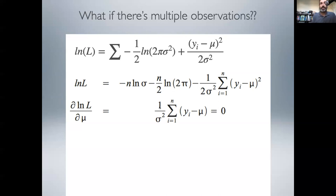And we just now get this one over sigma squared, sum of yi minus mu, set that equal to zero. As before, we can multiply each side by sigma squared and just get sum of yi minus mu equals zero.